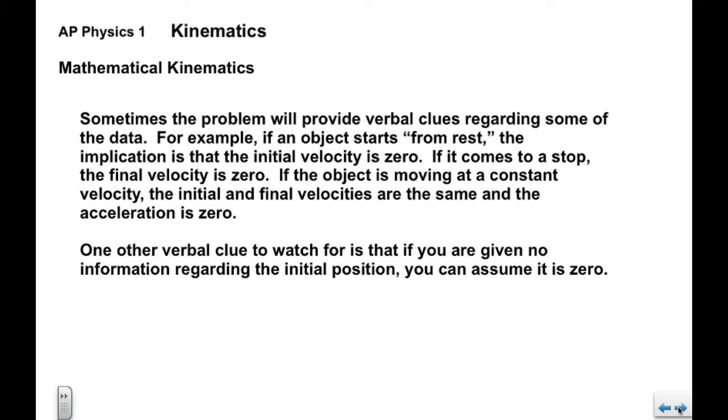Sometimes the problem will provide verbal clues regarding what some of the data is. For example, if an object starts from rest, the implication is that the initial velocity is zero. If it comes to a stop, the final velocity is zero. If the object is moving at a constant velocity, the initial and final velocities are the same and the acceleration is zero. One other thing to watch for is that if you're not given any information regarding the initial position, you can assume it's zero.